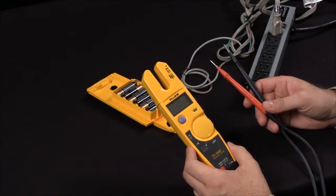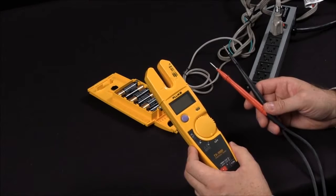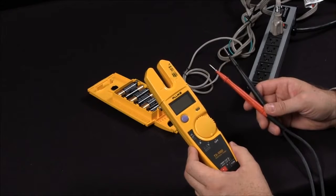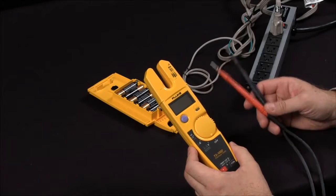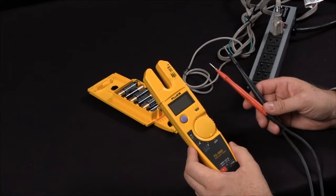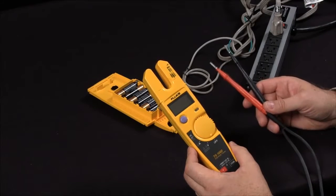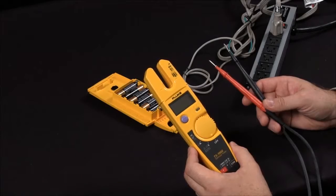Today, I will show you how to make measurements with the Fluke T5. This comes in two different styles. We have a T5-600, which measures up to 600 volts AC, and the T5-1000, which of course will measure up to 1000 volts AC.